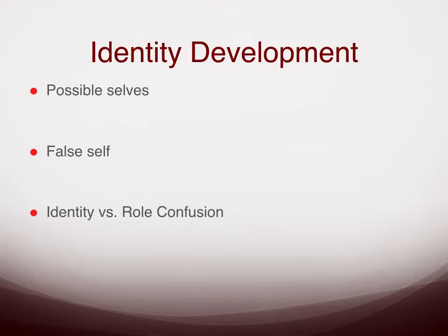Another thing adolescents may engage in as they explore who they really are is false self-behavior — behaving in ways that are contrary to who they feel they really are. By adolescence you have a pretty good sense of your core characteristics, such as being friendly or being skilled in certain areas. False self-behavior is when you go against who you think you are at the core, even if you don't yet have an established identity.